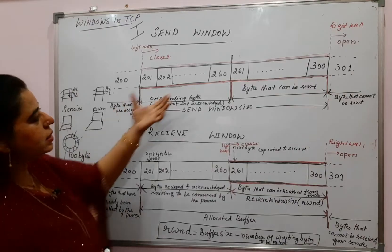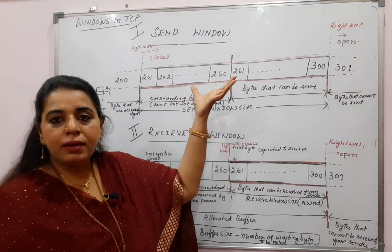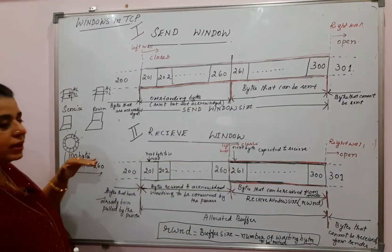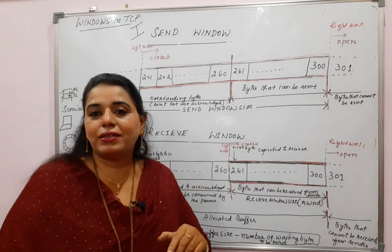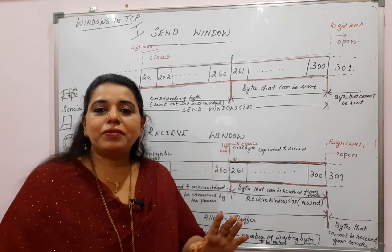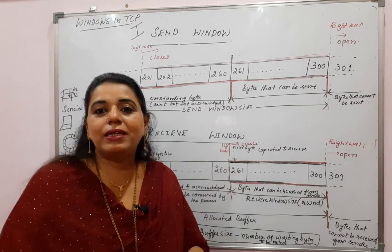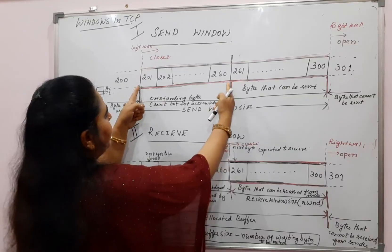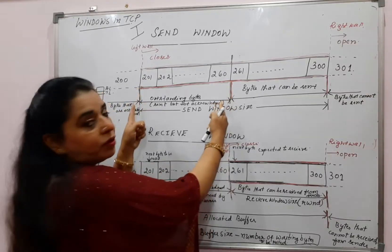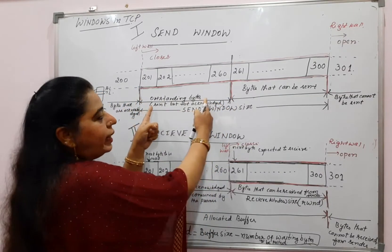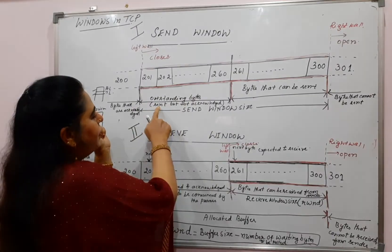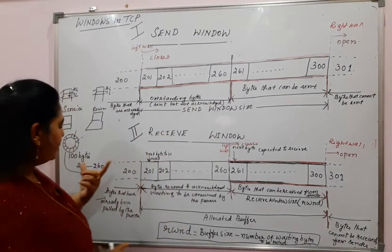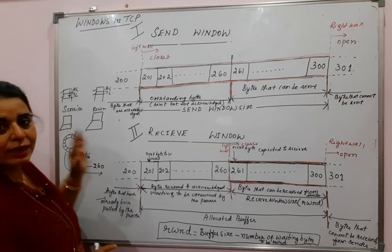But the sender is still holding those bytes in the buffer. The reason is that for bytes 201 to 260 which the sender has sent, it has not yet received the acknowledgement. Until it receives the acknowledgement, it will keep those bytes in the buffer. From 201 to 260, we call those bytes outstanding bytes — sent but not acknowledged. That is the reason this range still resides in the buffer.